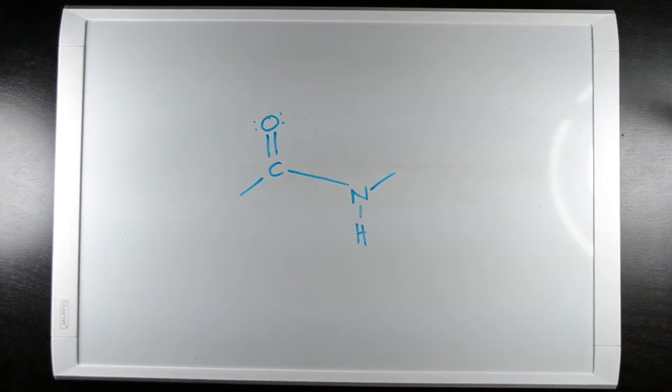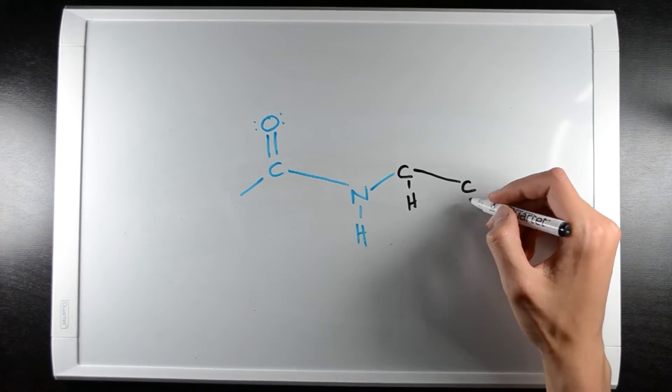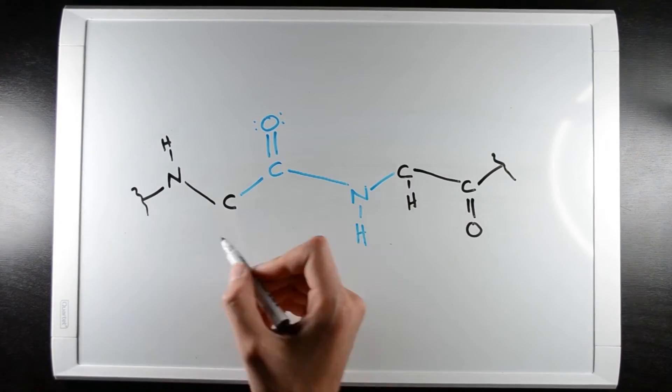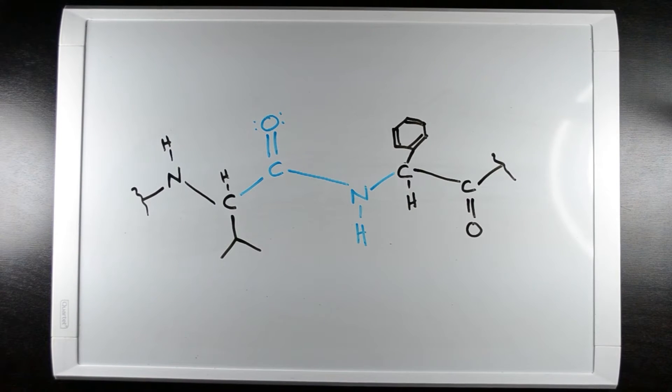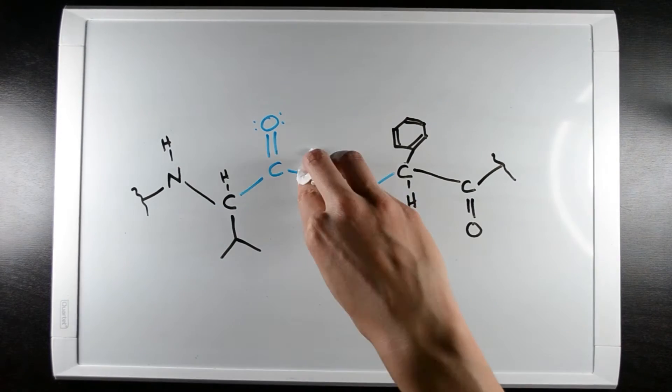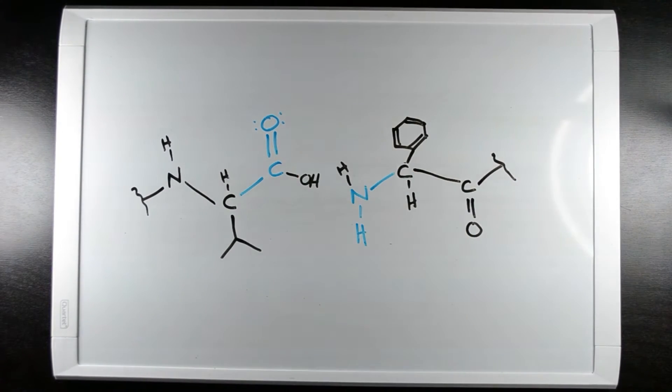This is an amide. It has a carbonyl group bonded to a nitrogen. Amide bonds are also called peptide bonds because they link amino acids into long polypeptide chains. Amide bonds can be hydrolyzed into a carboxylic acid and an amine.